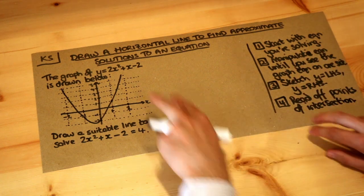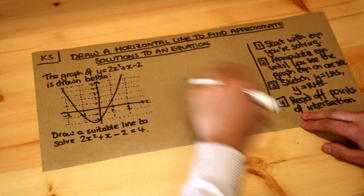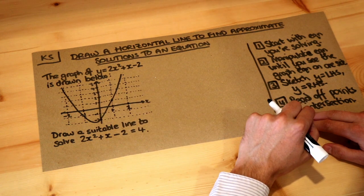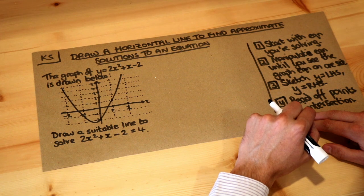So let's use these steps to solve this. We've got the graph of y equals 2x squared plus x minus 2, and we want to use a suitable line to solve 2x squared plus x minus 2 equals 4.